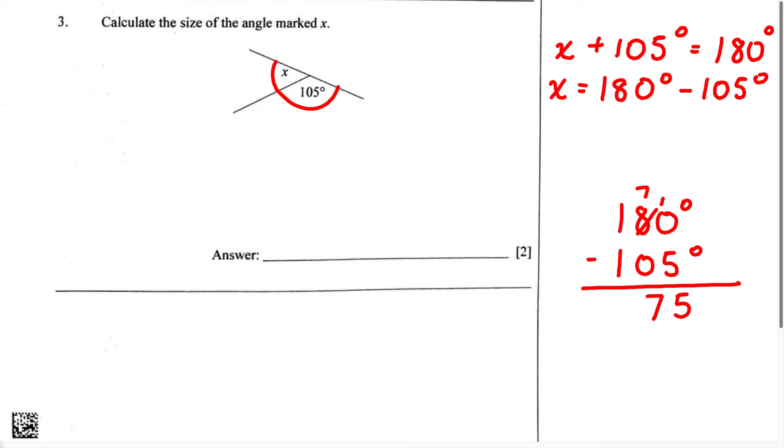And we know 1 minus 1 is going to give us 0, but we don't have to write this 0. And don't forget, we're dealing with angles, therefore we must write the angle symbol. Now when we look back up, we know X, therefore, is going to equal 75 degrees.